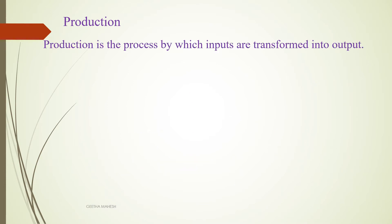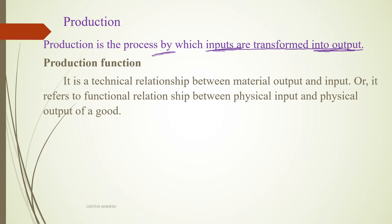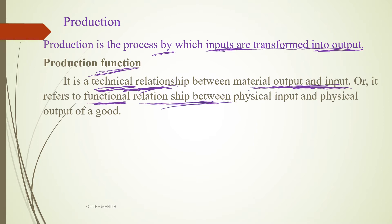Production is a process in which inputs are transformed into output. Production function is a technical relationship between input and output. That means, if you use the technology, input and output convert. There is a technical relationship between material, output and input. Production function explains the relationship between physical input and output.